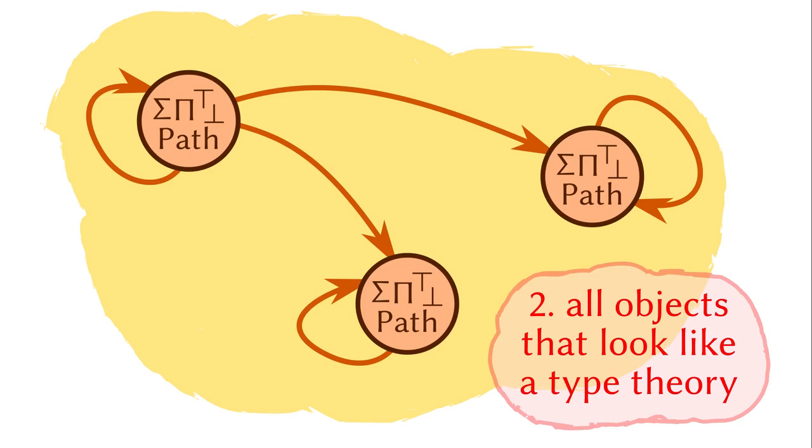The second part is to treat the type theory itself as an object we want to characterize. Recall that we defined a natural number algebra as any type with a zero and a successor. We can do the same for a type theory, though it will be much more complicated. An object that looks like a cubical type theory will be something equipped with the structures for functions, pairs, paths, the interval, the composition and coercion, and so on.